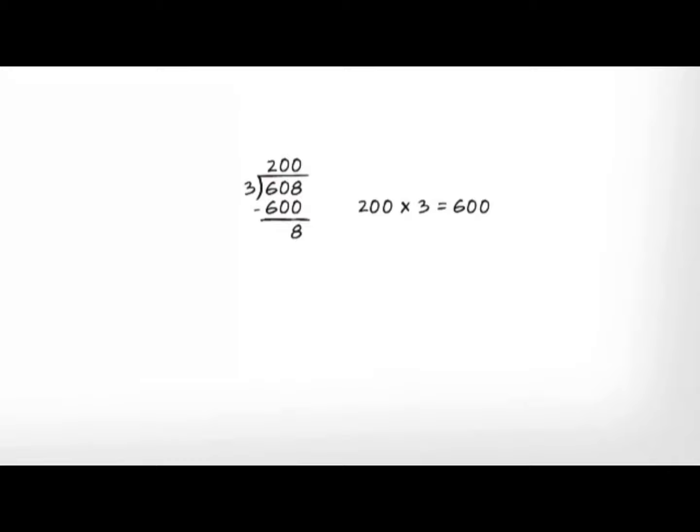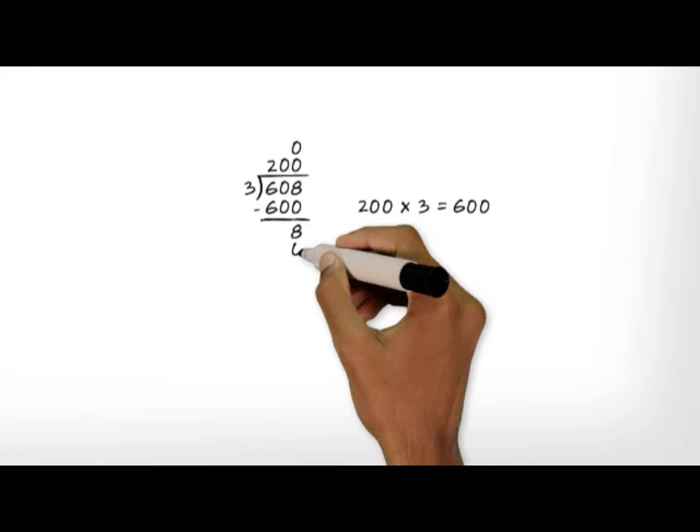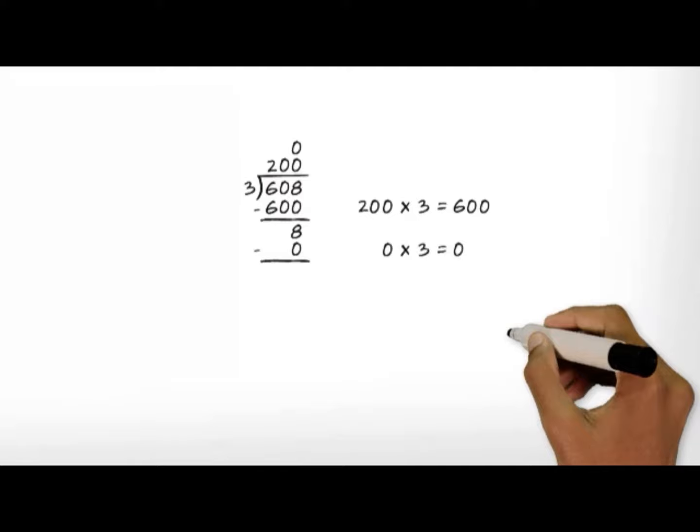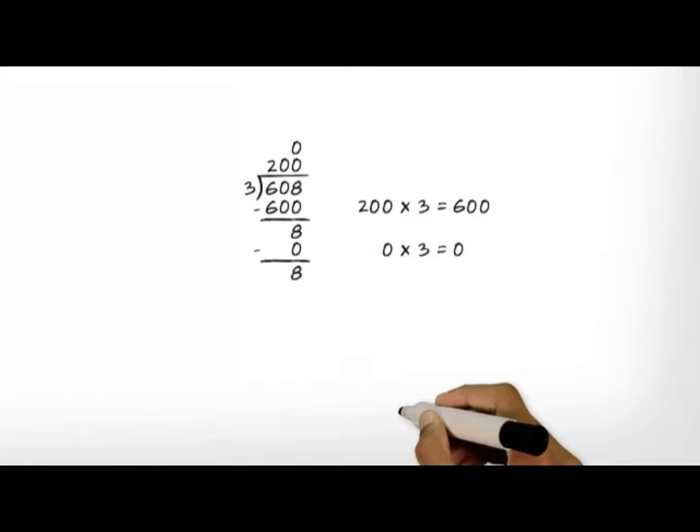Next, we can try to take out a group that is a multiple of 10, but since 8 is less than 10, we can't take out a multiple of 10 groups. So now we write 0 to show this. We do know that 0 times 3 is equal to 0, and of course, we know that 0 times any number is 0. However, we still have 8 left over.